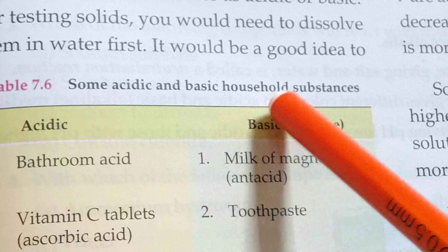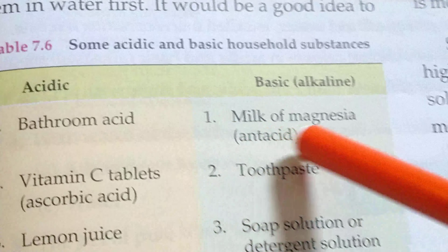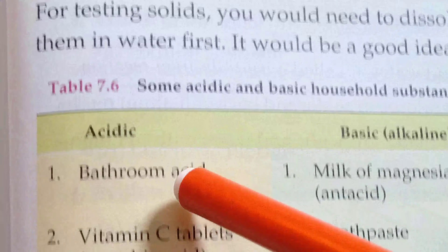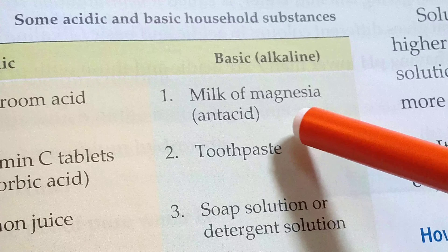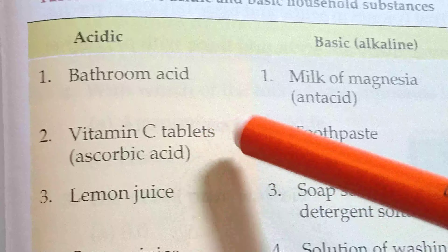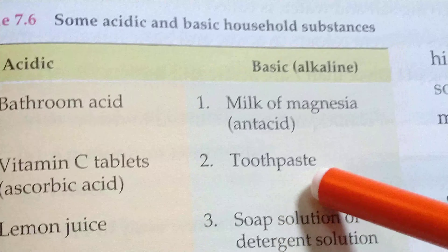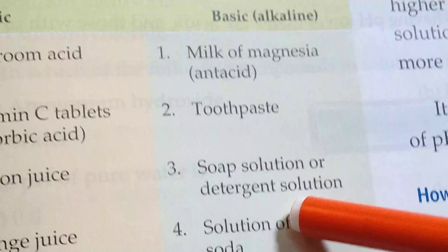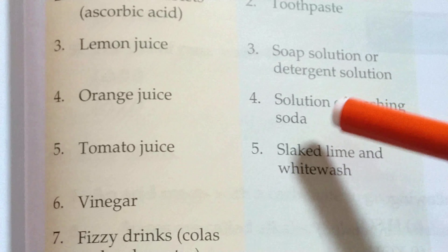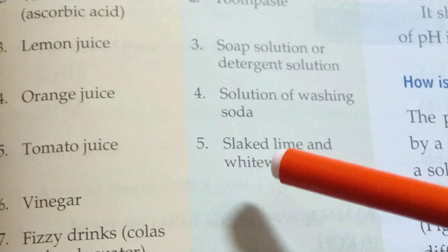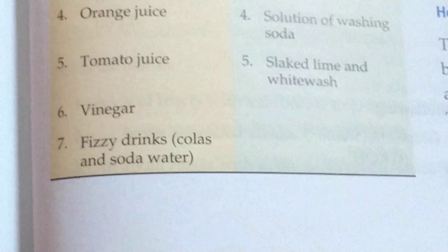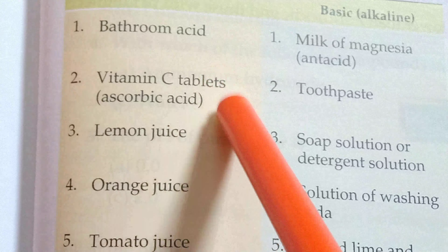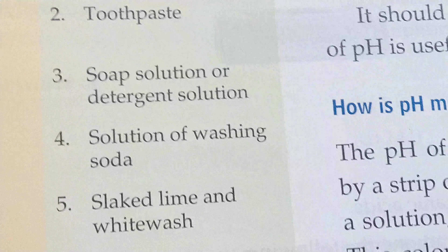Some acidic and basic household substances: Bathroom acid is acidic. Milk of magnesia and antacid are basic. Vitamin C tablets and ascorbic acid are acidic. Toothpaste is basic. Lemon juice, orange juice, tomato juice, vinegar, and fizzy drinks are acidic. Soap solution, detergent, solution of washing soda, and slaked lime or whitewash are basic. These are the commonly used acidic and basic substances in households.